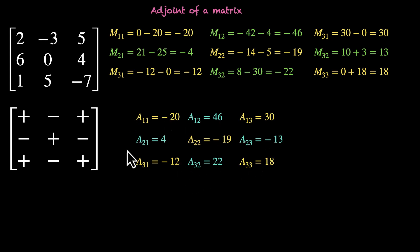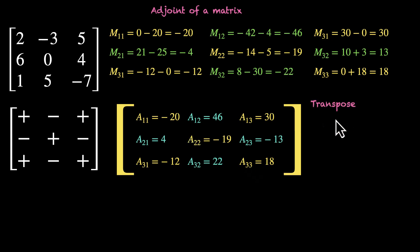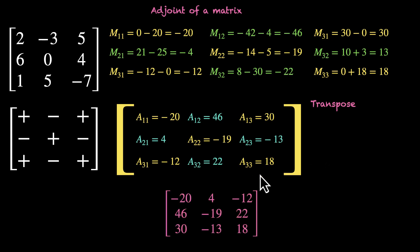Now that we have our cofactors, we're ready to find the adjoint. We first put them inside a matrix in the corresponding order, and we then take its transpose. And that's it — taking the transpose of this cofactor matrix gives us the adjoint of the original matrix.